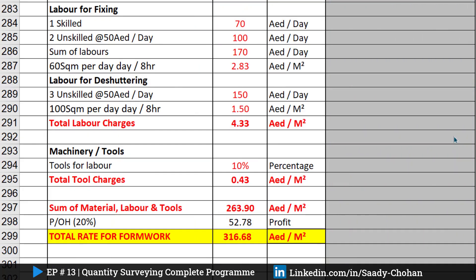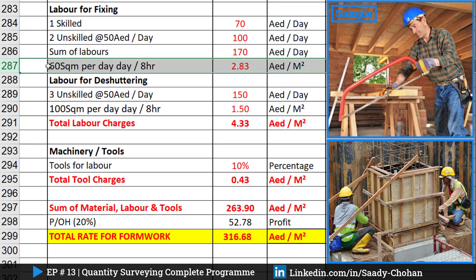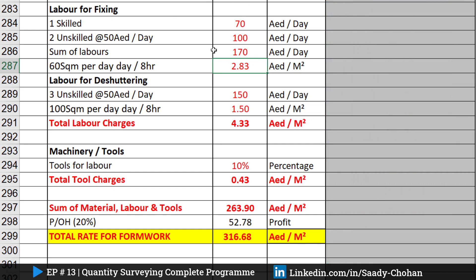How many laborers do we need? Do we need a carpenter, a technician, unskilled or skilled labor? I've considered here one skilled carpenter and two helpers. This is the cost for skilled and unskilled labor as per UAE rates. The sum of both is 170 — that's the cost per day. We need to convert this into a square meter rate for our BOQ. Assuming they can finish 60 square meters per day, dividing gives us 2.83 as the labor cost per square meter for fixing.